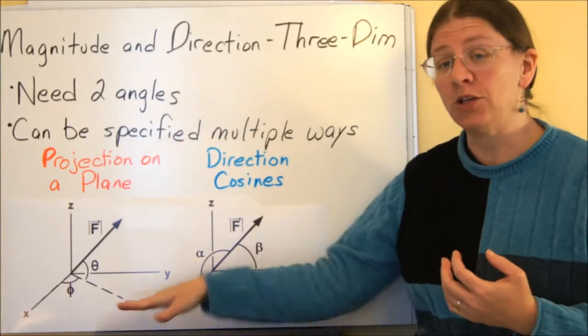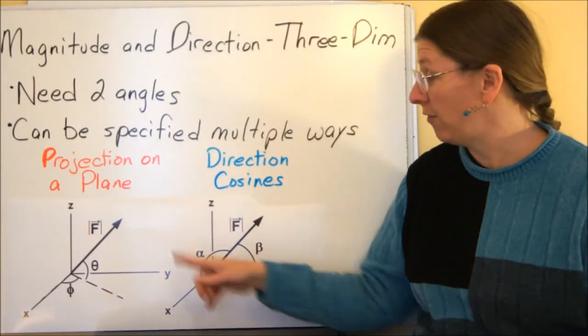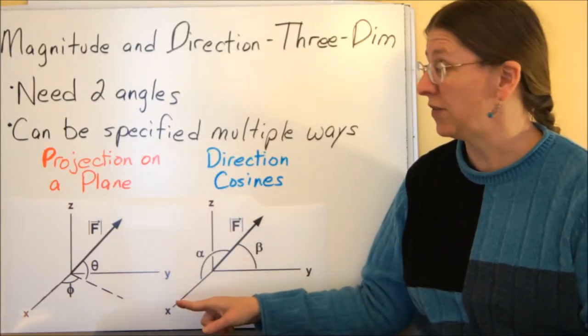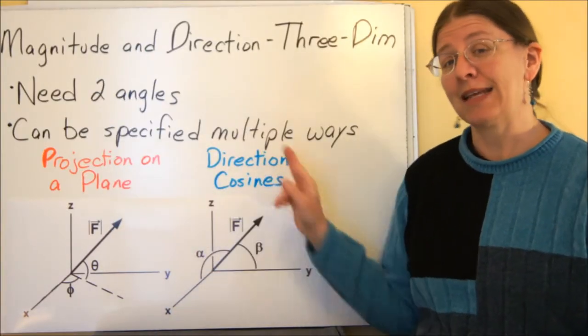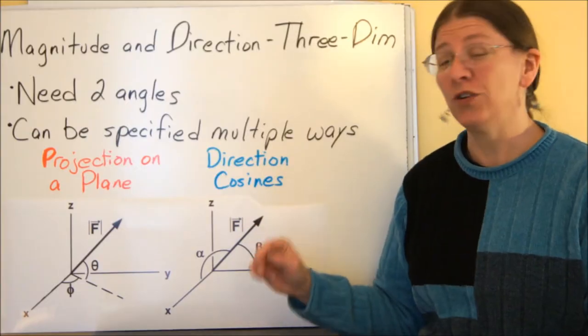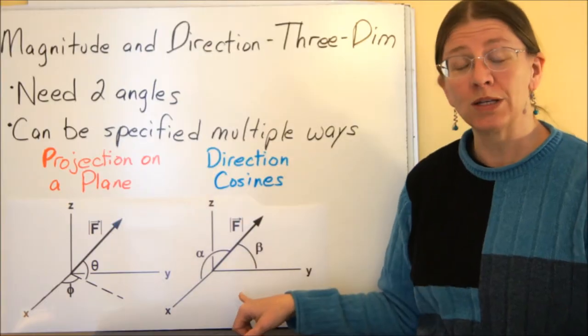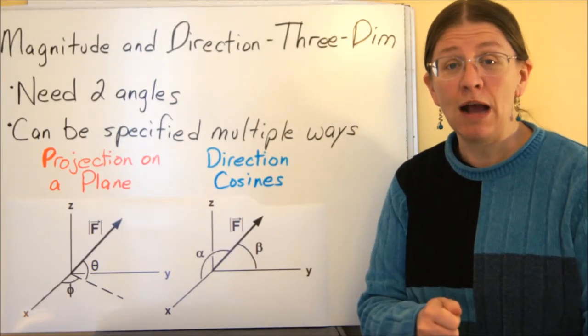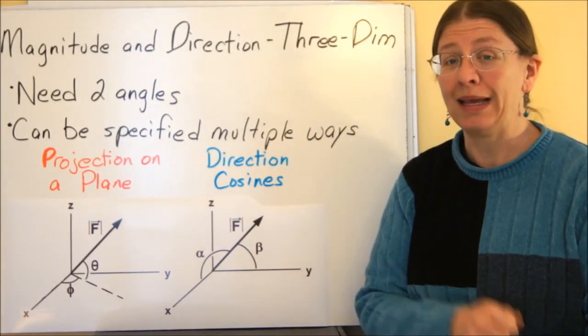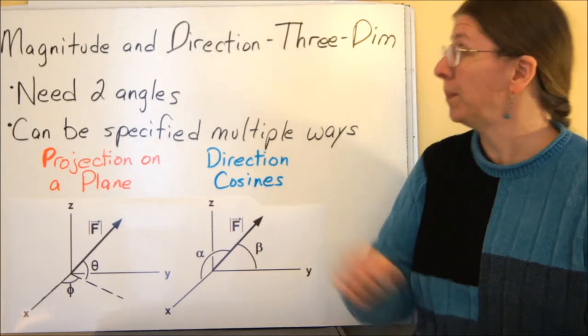The problems in your book are going to look like this: just a vector and two angles given to you. The trick is that this can be specified in one of two different ways. You can specify this by using a projection on a plane or with direction cosines. You need to be able to figure out which one is which and how to get that into Cartesian form.